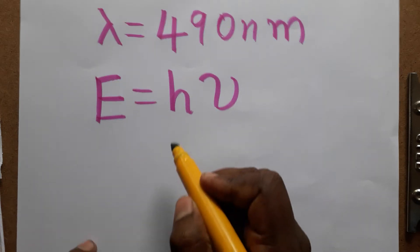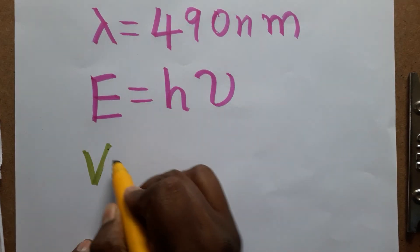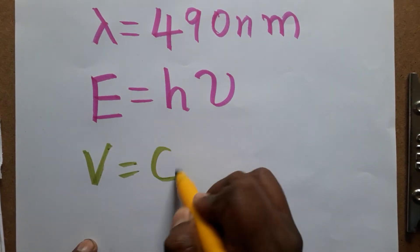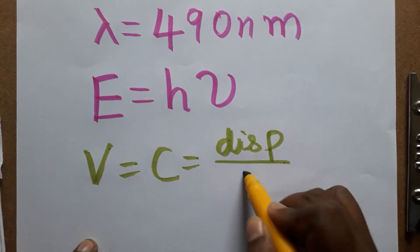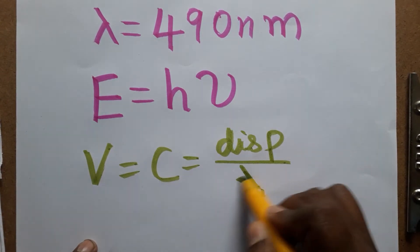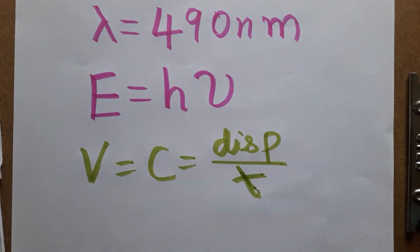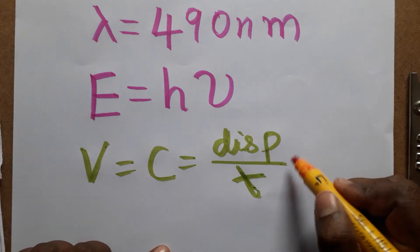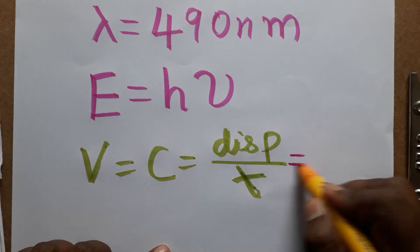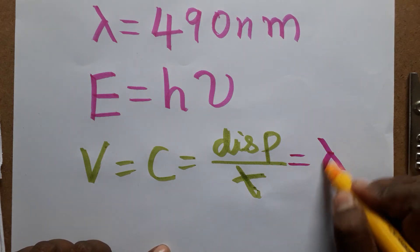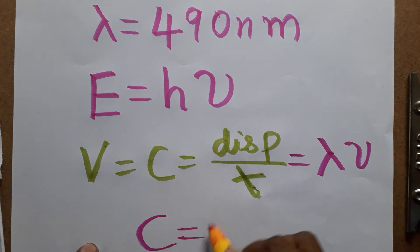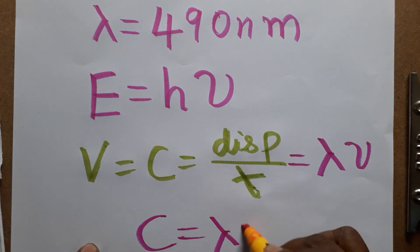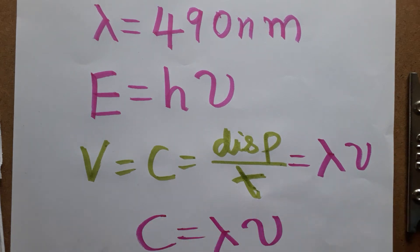In wave theory, the velocity — the speed of light — is equal to displacement divided by time. Here displacement is called wavelength, and one over time period is frequency. So velocity of light equals wavelength times frequency.